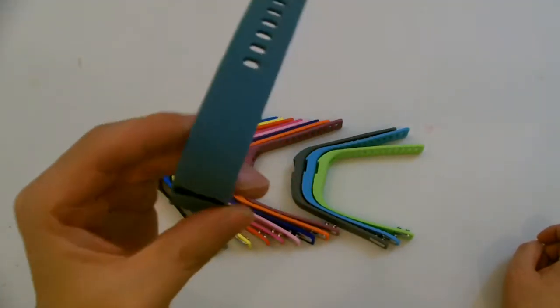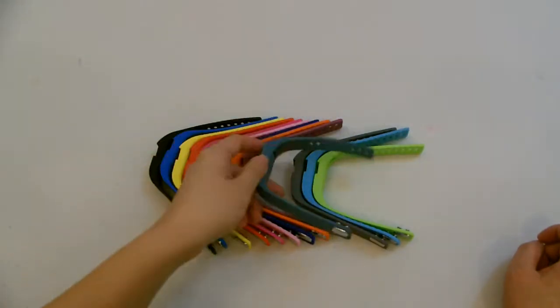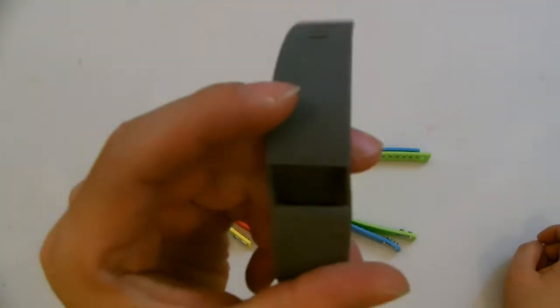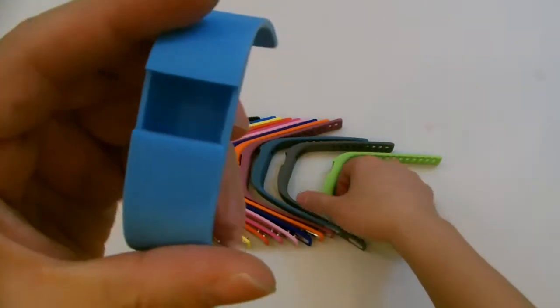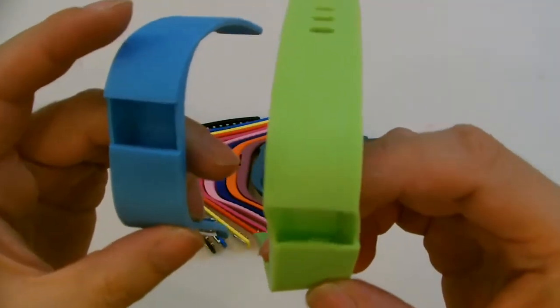And then we have the bluish gray, and then we got the gray, the baby blue, and the green.